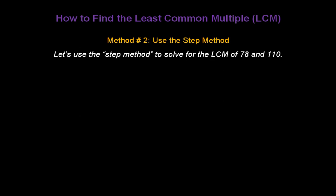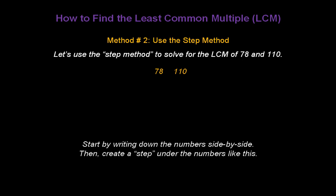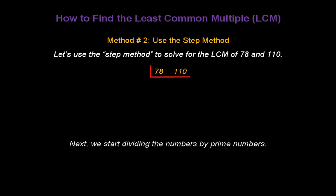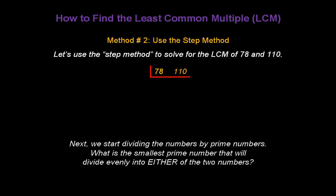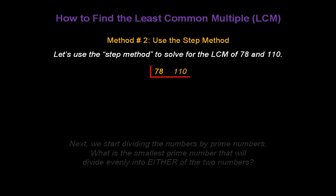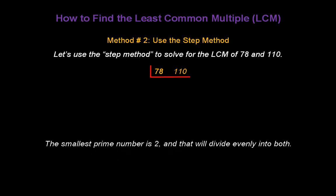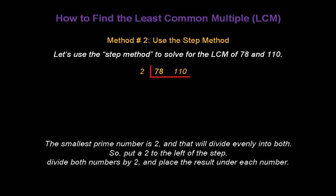Method 2 is called the step method. Let's use the step method to solve for the least common multiple of 78 and 110. The first thing we do is start by writing down the numbers side by side. Then, create a step under the numbers. Next, we start dividing the numbers by prime numbers. What's the smallest prime number that will divide evenly into either of these two numbers? The smallest prime number is 2, and that will divide evenly into both numbers. So, put a 2 to the left of the step. Divide both numbers by 2 and place the result under each number: 78 divided by 2 is 39, and 110 divided by 2 is 55.